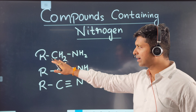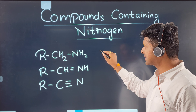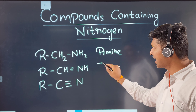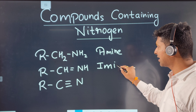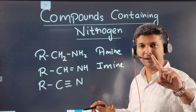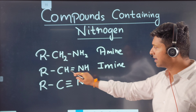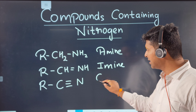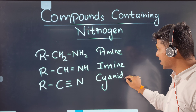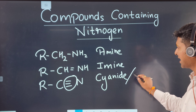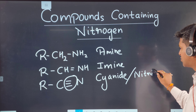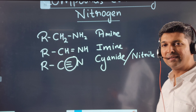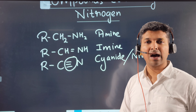The first functional group is RCH₂NH₂, that is a primary amine. Then we have an imine. When carbon and nitrogen share a single bond, it is called an amine. If they share a double bond, it is called an imine. If carbon and nitrogen share a triple bond, it is called a cyanide as well as a nitrile.